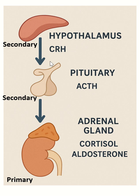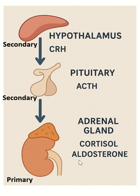In this video, we learn about adrenal insufficiency. To understand that better, we should know how the adrenal gland hormones are regulated. The hypothalamus releases corticotrophin-releasing hormone, which acts on the anterior pituitary gland to produce ACTH. ACTH then acts on the adrenal gland to release cortisol and aldosterone.